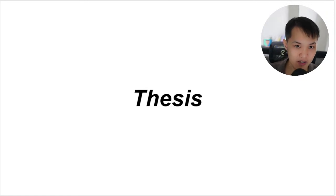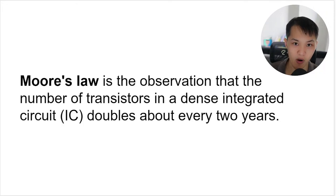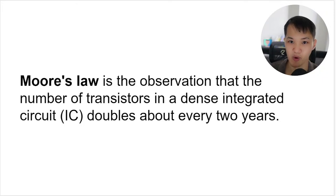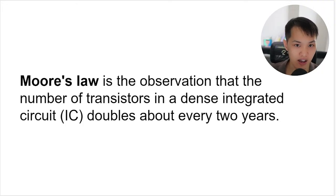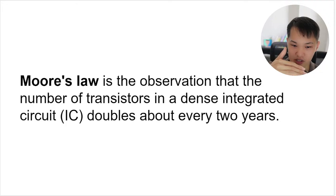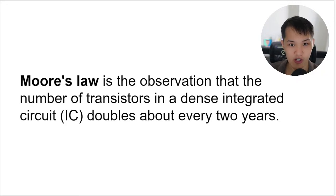Now for the investment thesis for TSMC. I start with Moore's Law — the observation that the number of transistors in a dense integrated circuit doubles every two years. They keep cramming more and more transistors into chips, making them much better and more efficient. If you understand exponential growth — doubling every two years — the curve goes up and up. This is what powers all the innovations in the tech industry. But the second Moore's Law, also called Rock's Law, which not many people know, states that the cost of a semiconductor chip fabrication plant doubles every four years.